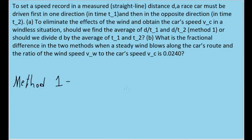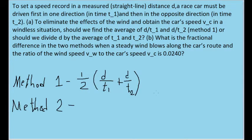Method 1 is described as the average of d, the distance, divided by the first time, and d divided by t sub 2, the second time. Method 2 is described as dividing d, the distance, by the average of the two times.